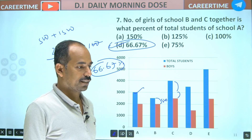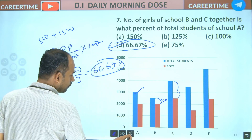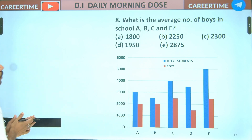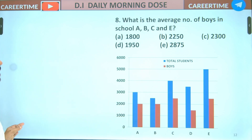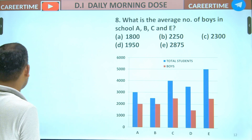Okay, clear. Next question: what is the average number of boys in schools A, B, C, D, E? D is not given.